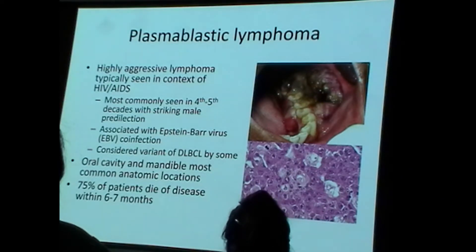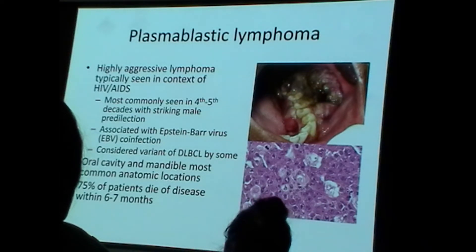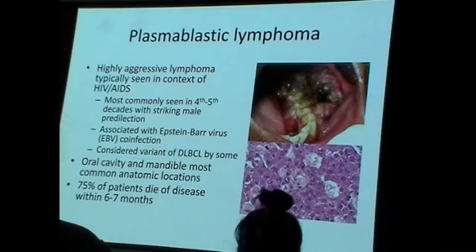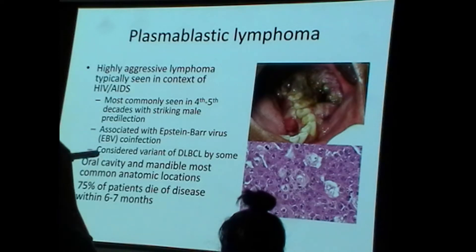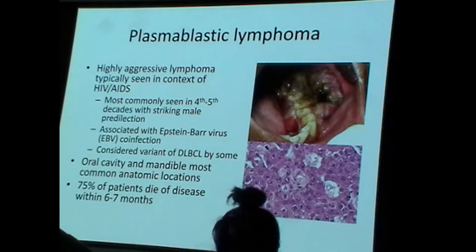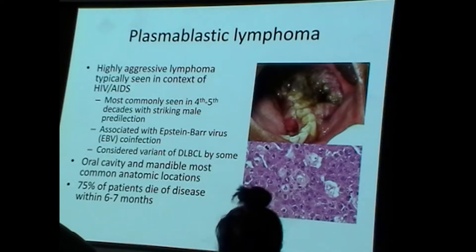Plasmablastic lymphoma is usually seen in the HIV-AIDS setting, sometimes in the setting of other kinds of immunosuppression. There's a striking male predilection, usually in middle age — the age range of untreated advanced HIV infection. It is almost always associated with infection by Epstein-Barr virus. The most common anatomic location is the oral cavity and jaw region, specifically the mandible, though the gastrointestinal tract is also involved.